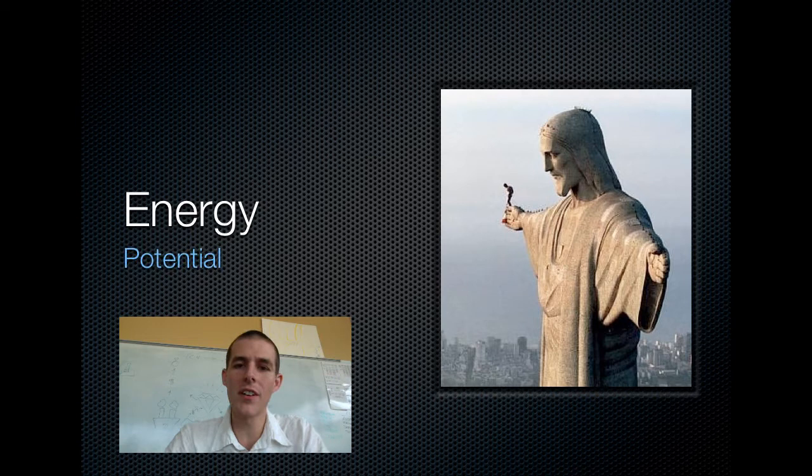Your third form is potential energy. If you look at that picture right there out on the hand of the statue, you see a base jumper getting ready to jump off. He's not moving yet, so he doesn't have kinetic energy. He has potential energy. He is high above the ground, so the energy that he has is represented by the distance between him and the ground. His potential energy will be converted to kinetic energy the moment he steps off and leaps.